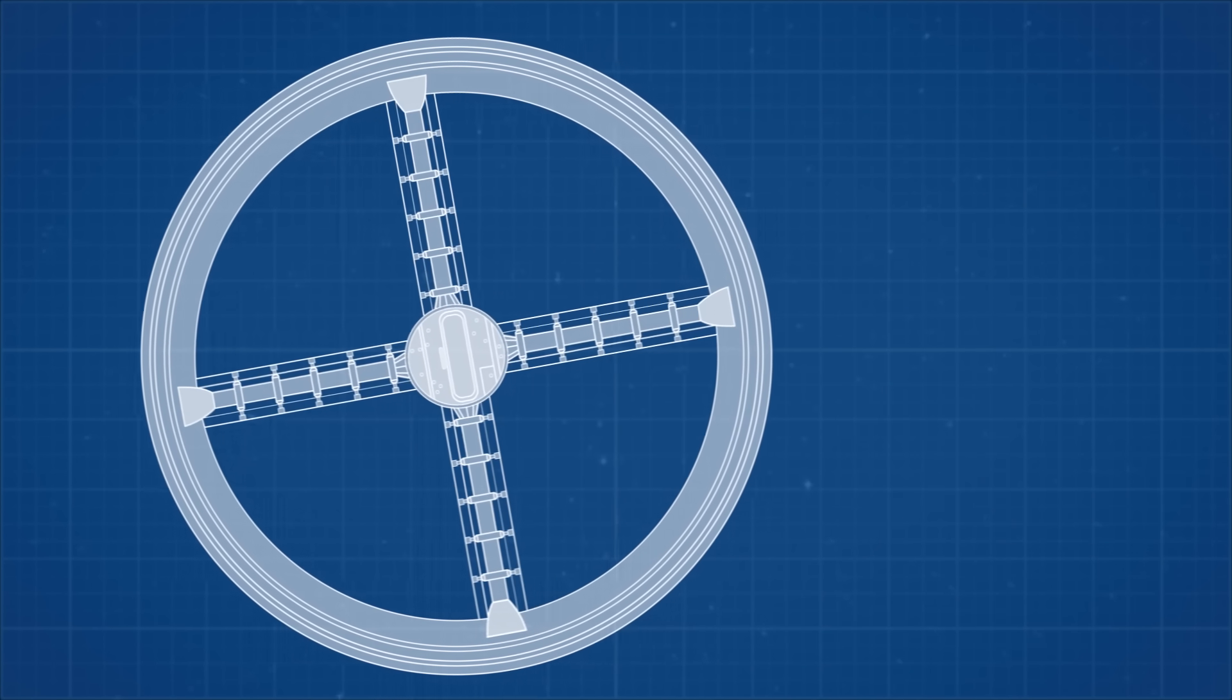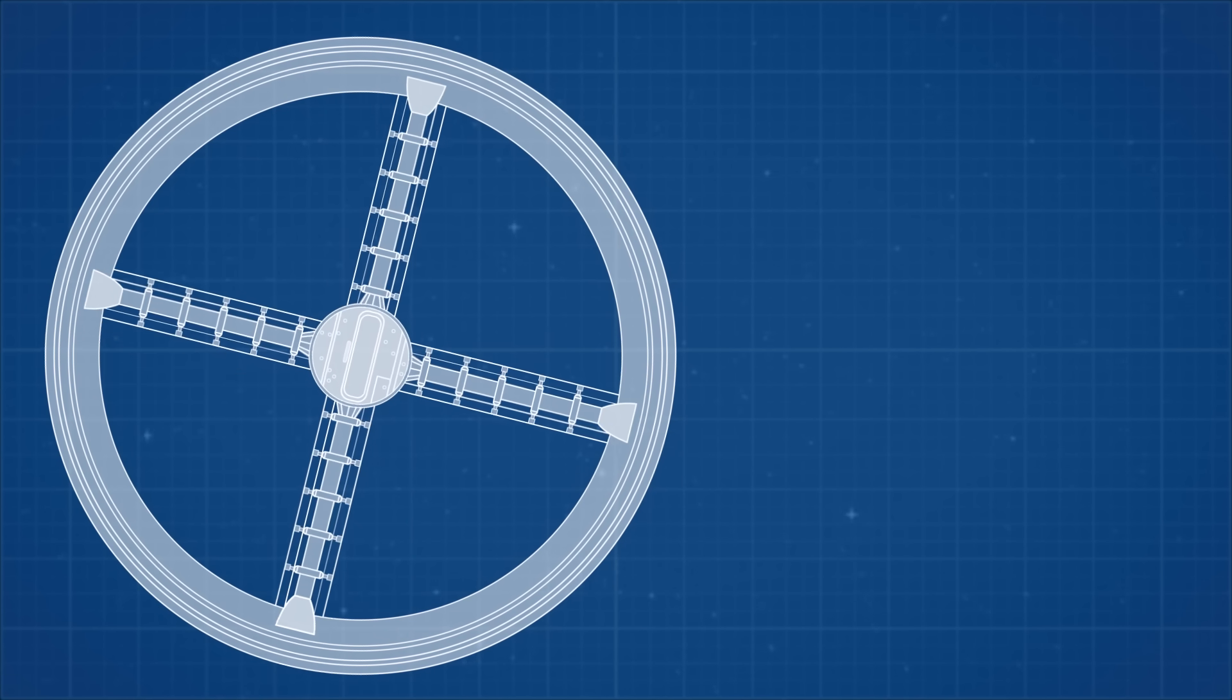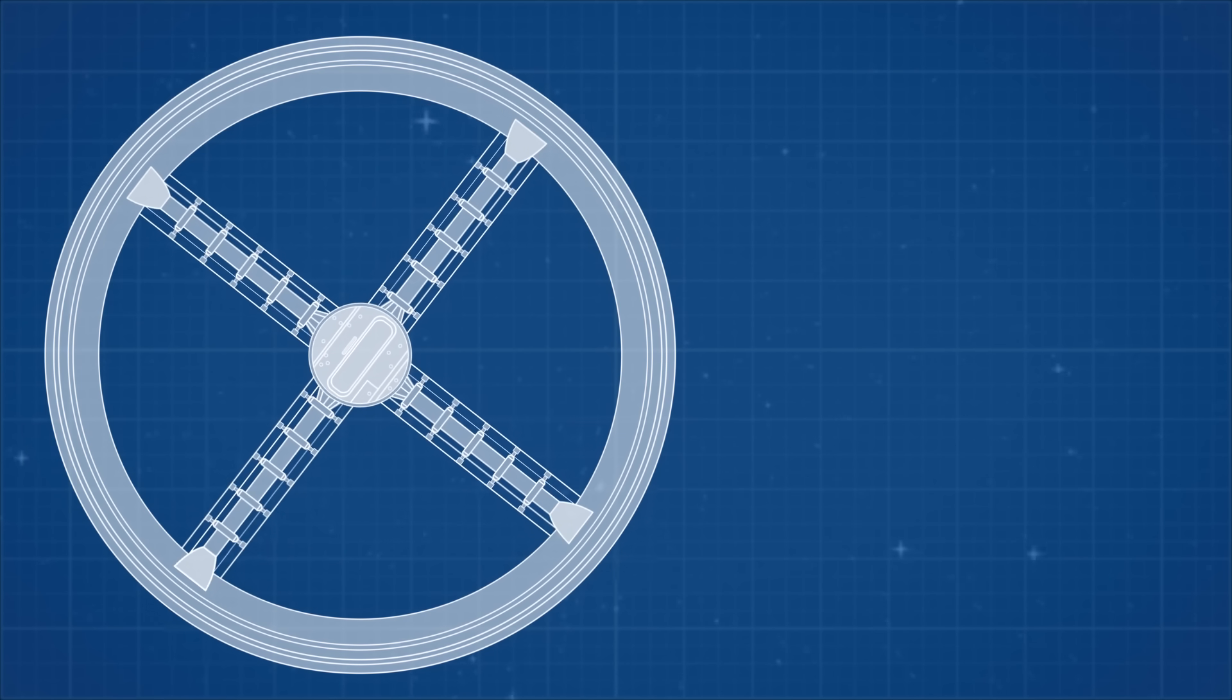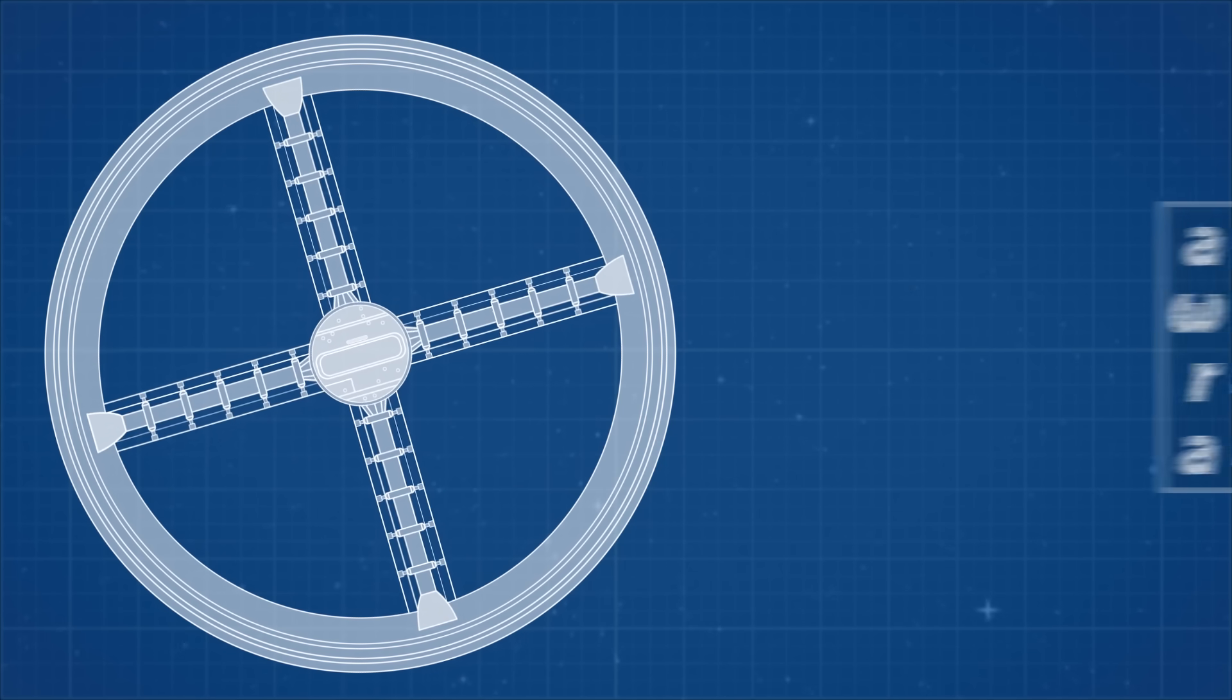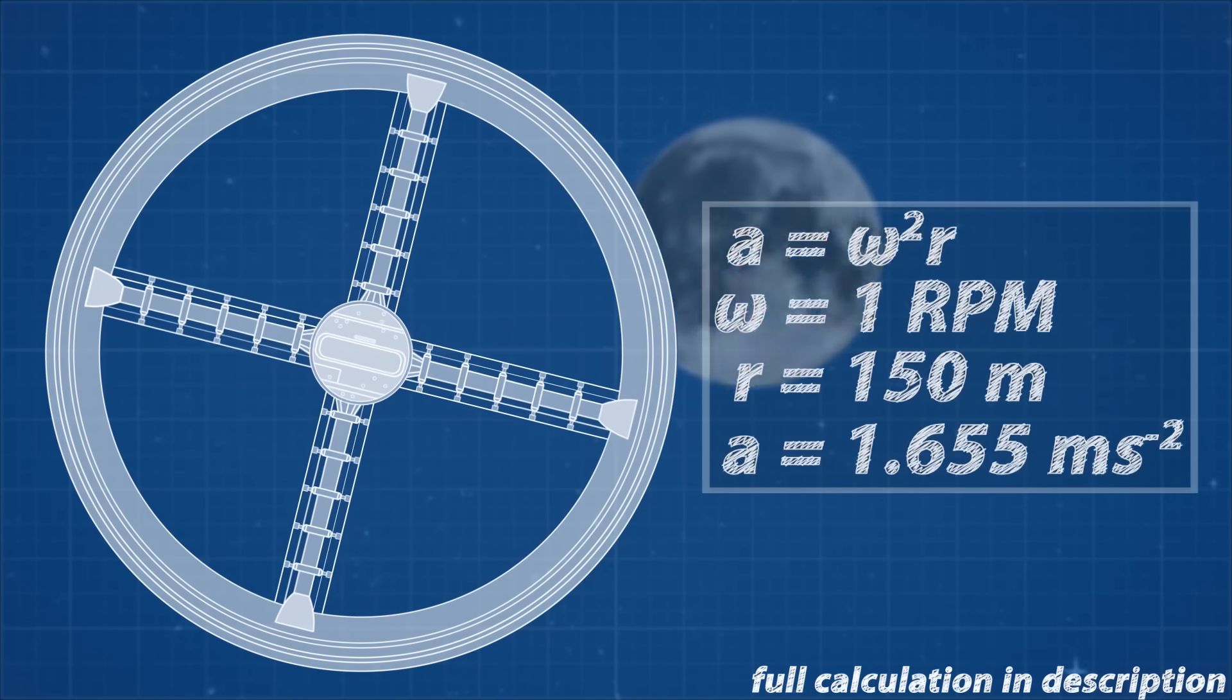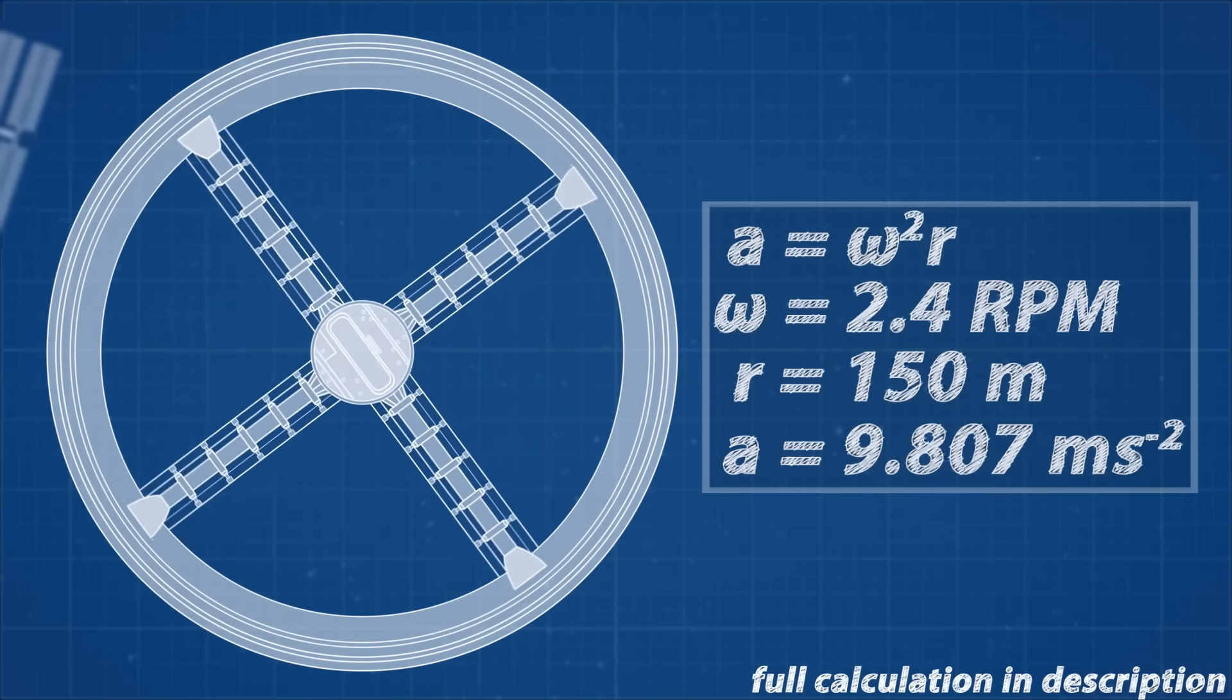The acceleration your body will experience is directly proportional to the speed and radius of the space station. We can calculate the gravity space station V from 2001 A Space Odyssey would generate, with some pretty simple math. The space station V had a diameter of 300 meters and spun on its axis once every 60 seconds. That would put its gravity at about the same as the moon's. For it to have a gravity similar to Earth's, it would need to spin once every 24 seconds.